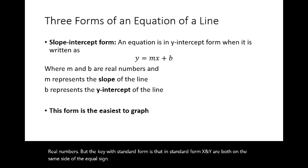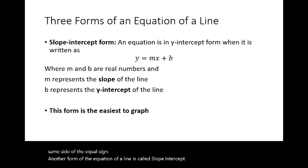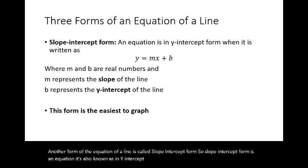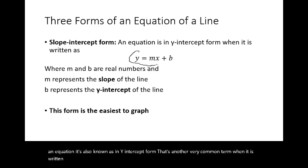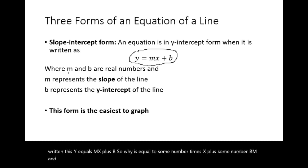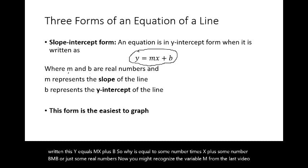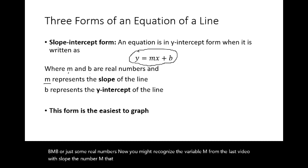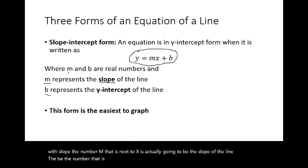Another form of the equation of a line is called slope-intercept form, also known as y-intercept form. It is written as y equals mx plus b, where m and b are real numbers. The variable m next to x is the slope of the line, and b — the number added at the end with no variable — is the y-intercept of the line.